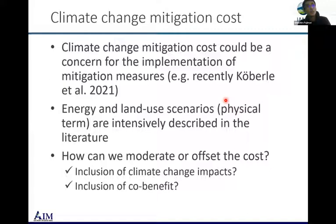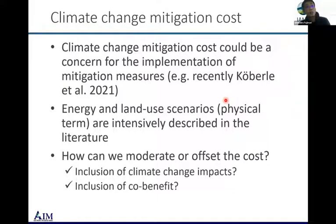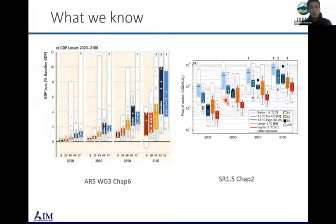As observed in the IPCC report, in the past, energy and non-energy physical transformations are quite well described, while the economic side and cost metrics are not as well investigated so far. There are several papers that discuss the total climate costs including climate change impacts and the co-benefits of climate change mitigation.